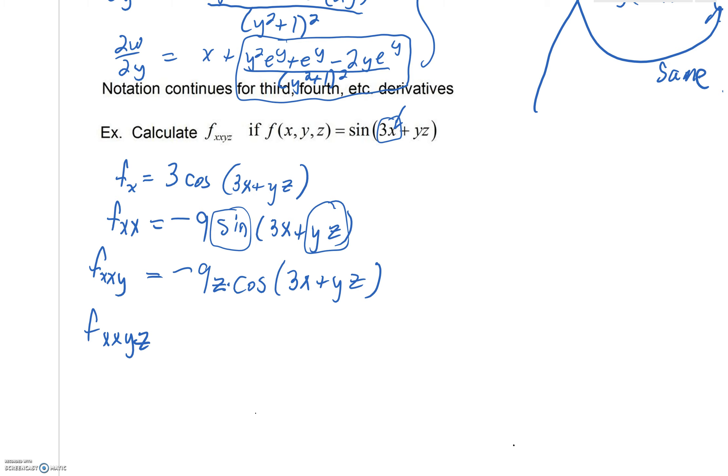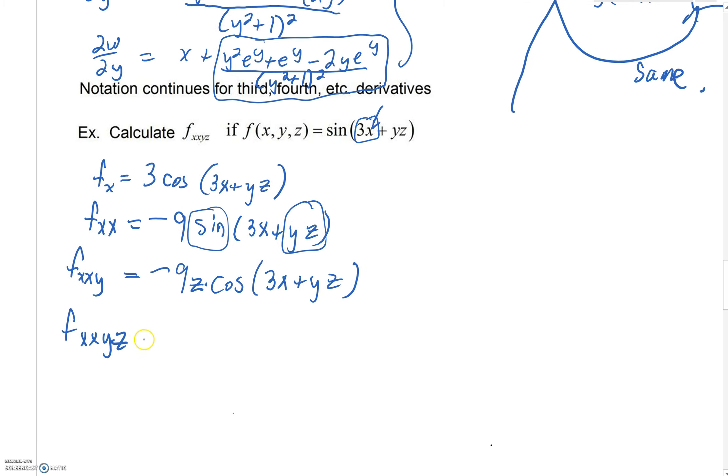Multivariable calculus 14.3. We're finishing up this very last problem. One last derivative with respect to z. Obviously we're going to need the product rule. So we'll take our first function u. Here's a negative 9z.